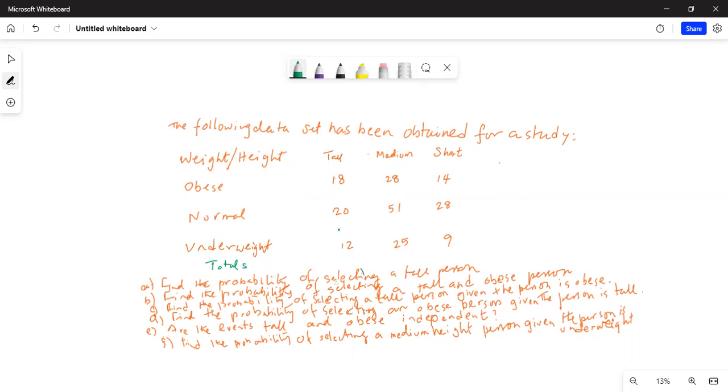Of each column first. 18 plus 20 is 38, plus 12 is 50. Then 28 plus 51 is 79, plus 25 is 104. Just to keep the numbers correct, we will use the calculator. 28 plus 51 plus 25 is 104.